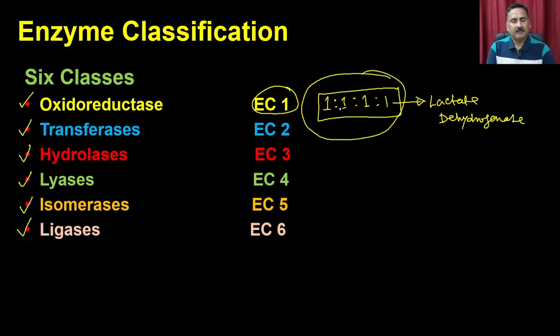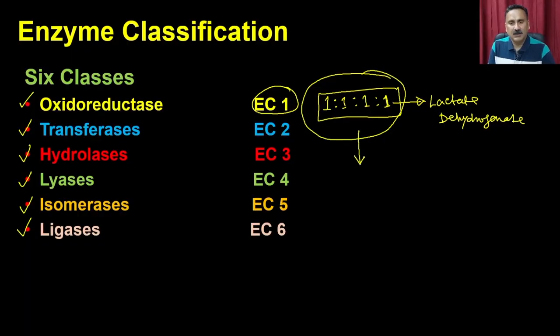In practicality it is very difficult to write the name of an enzyme as a number like 1.1.1.1, because it is very cumbersome to say that the conversion of pyruvate to lactate is catalyzed by enzyme 1.1.1.1. So that is not the way enzymes are named. There is a complete history of how enzyme nomenclature evolved over time.